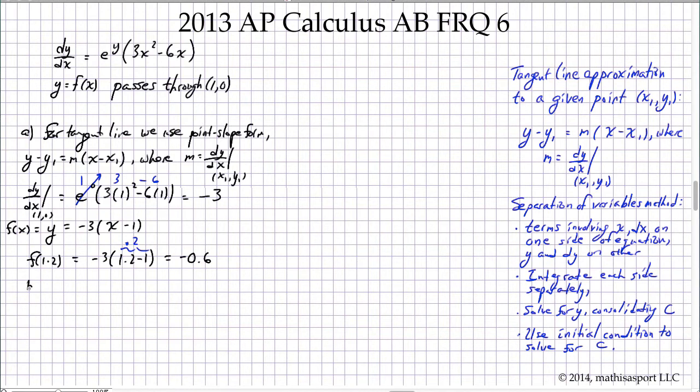Part b is the meatier part. Here we're trying to solve the differential equation—not find an approximation of f at a particular point, but rather solve for the function exactly making use of the initial condition. This is a classic separation of variables problem.